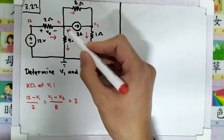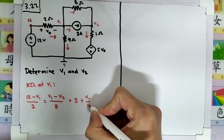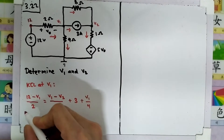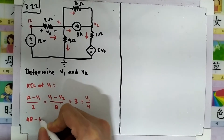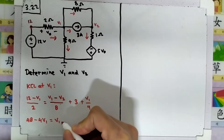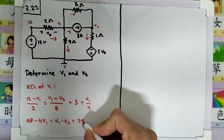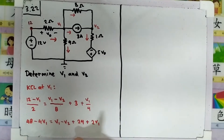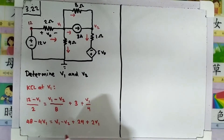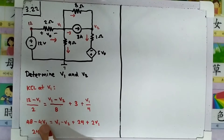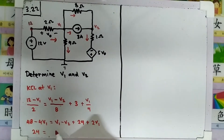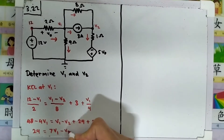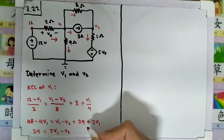The 3 is from this resistor, and the last current is v1 divided by 4. We multiply both sides by 8, so we have 48 minus 4v1 equals v1 minus v2 plus 24, plus 2v1. Doing the algebra, we move 24 to the left and collect v1 terms: v1 plus 2v1 is 3v1, plus 4v1 is 7v1. This gives us 24 = 7v1 minus v2. Save this as Equation 1.